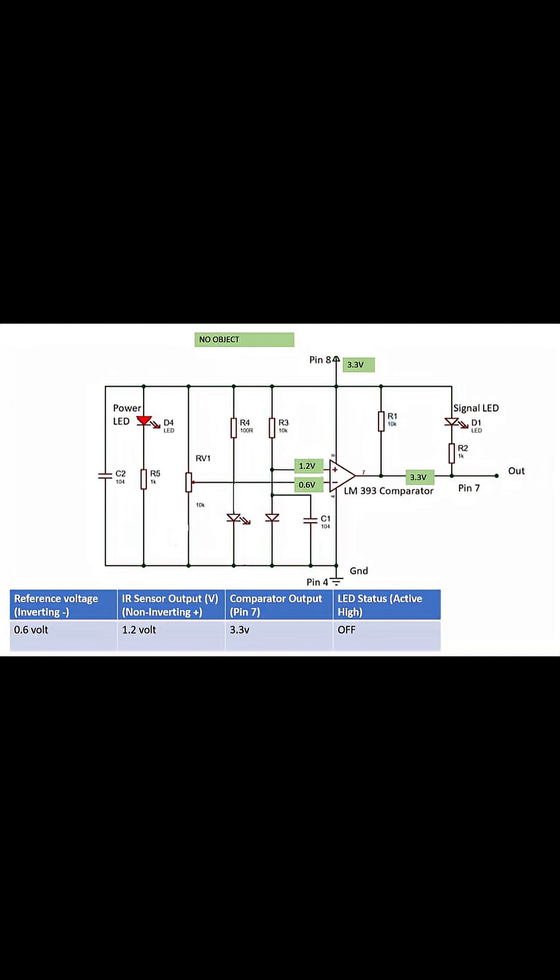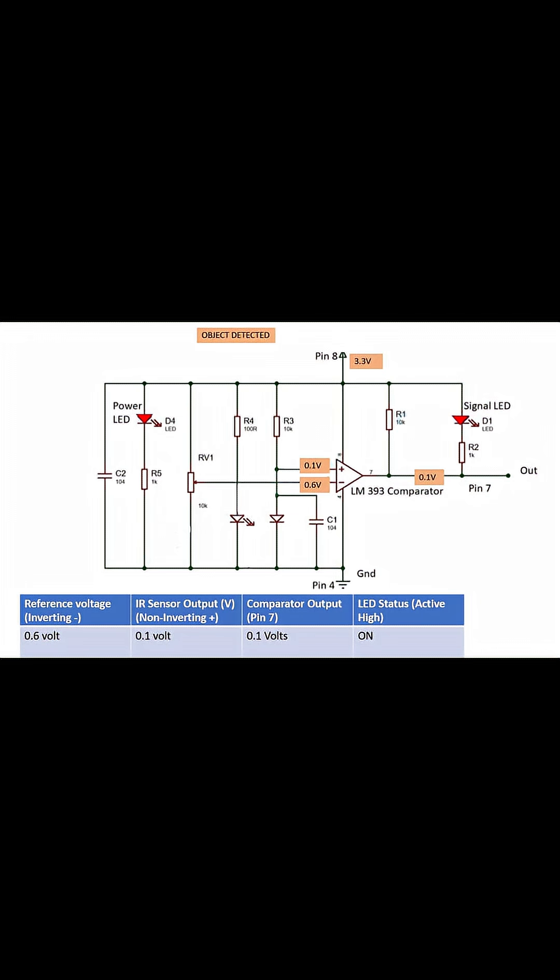Now, when an object is placed in front of the sensor, IR rays reflect and hit the photodiode. Its output drops to about 0.1 volts. Now, 0.1 volts is less than 0.6 volts. The comparator detects this and sets the output low. The output LED turns on, indicating object detection.